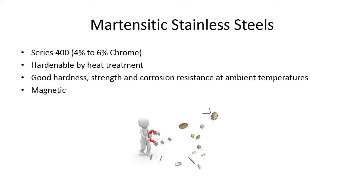Martensitic stainless steels are Series 400, with 4 to 6% chrome, hardenable by heat treatment. They have good hardness, strength, and corrosion resistance at ambient temperatures, and they are magnetic. A good knife blade is a martensitic stainless steel — it has the corrosion resistance so it doesn't rust, but it's hard enough with the martensite so it holds a good edge.